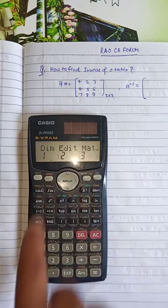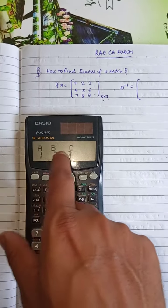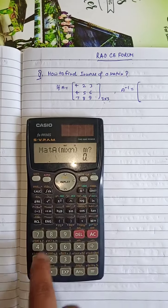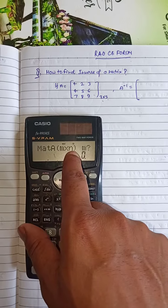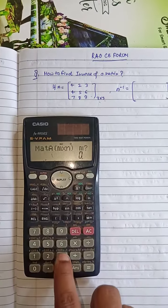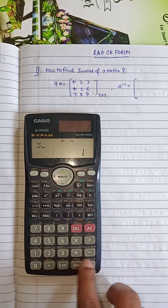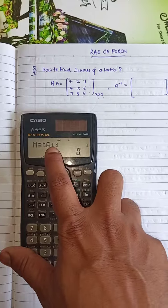Set the dimension of the matrix. We can choose A, B, or C; I choose 1. This shows M by N, meaning row by column. I press 3 by 3 for a 3x3 matrix.